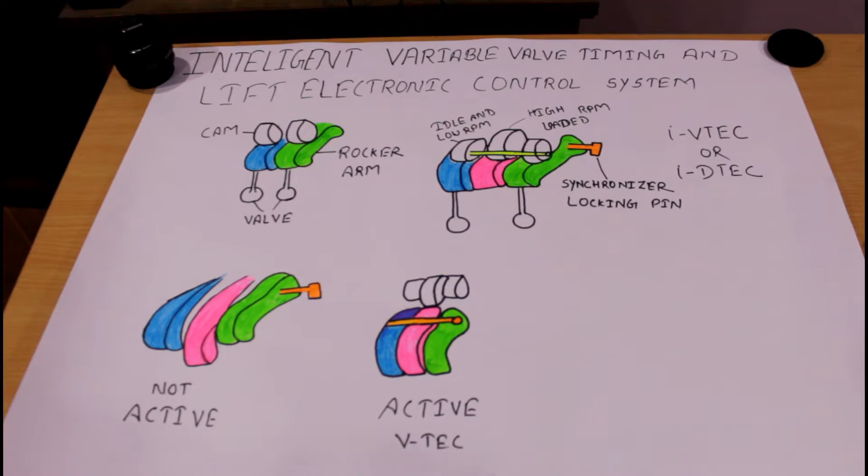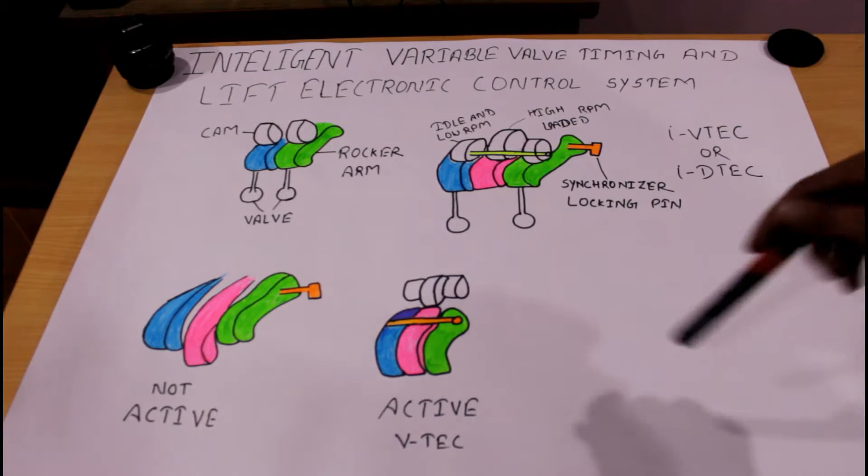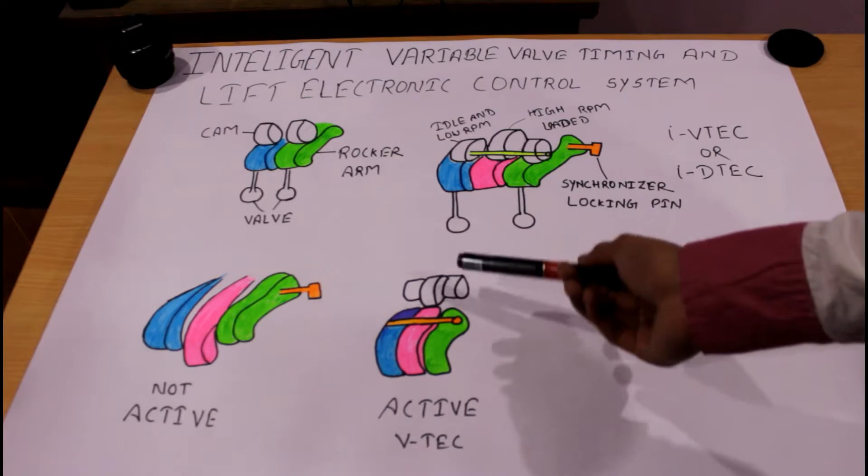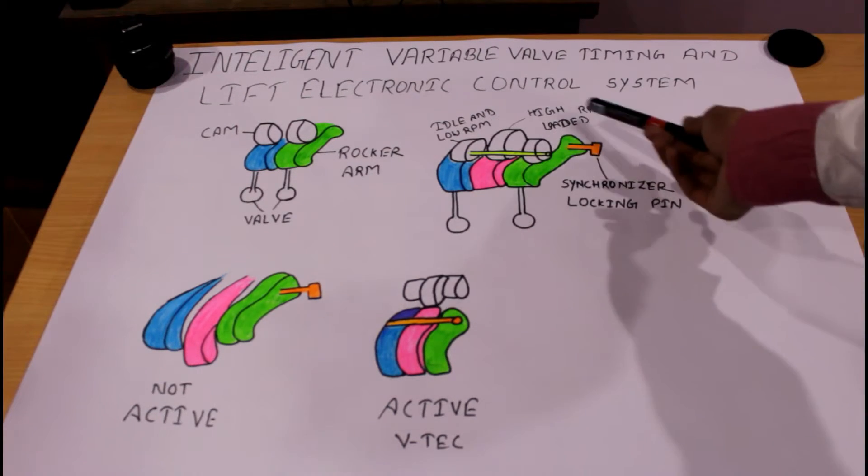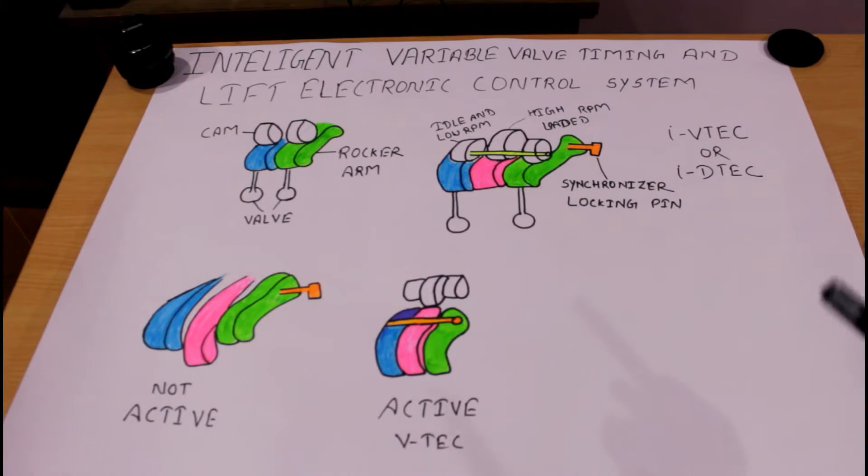This is the condition of active VTEC. At that time, the conventional cams are not in use and the high RPM loaded VTEC cam is used for the engine control system. Because of the high RPM loaded cam, these rocker arms go downward more than conventional.